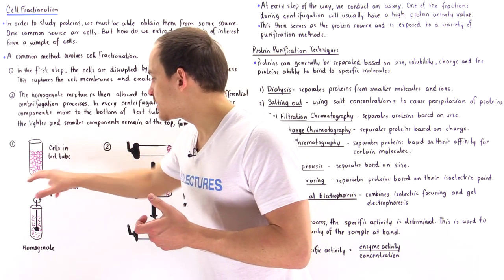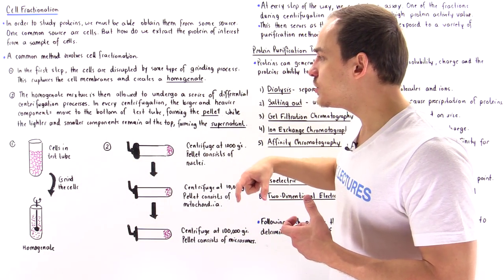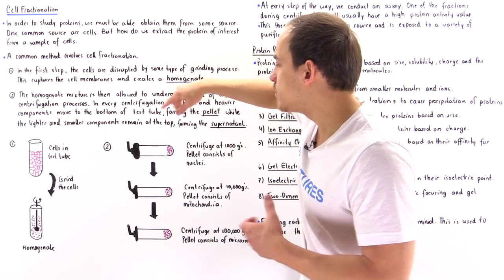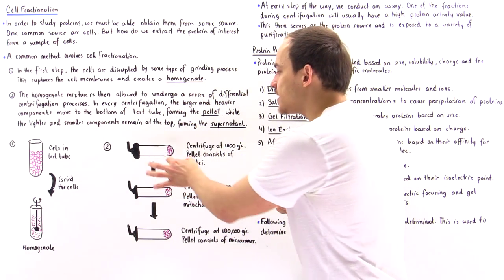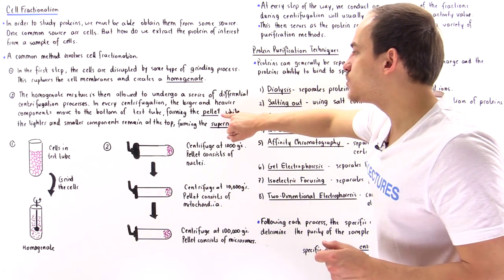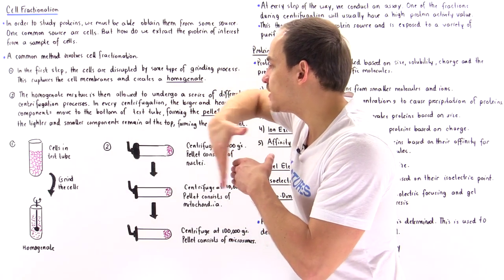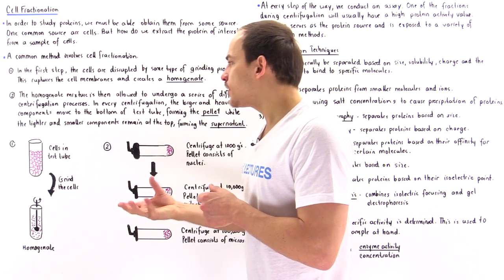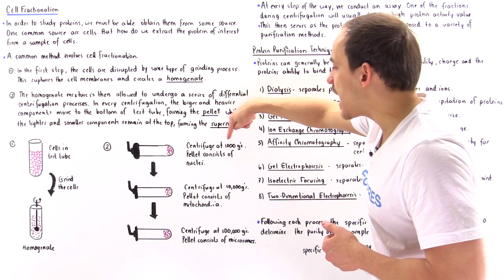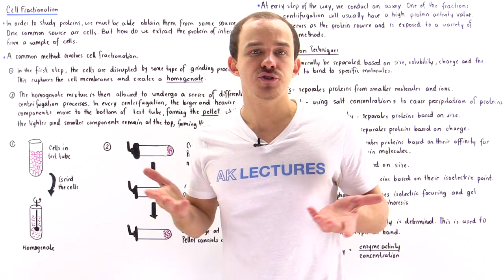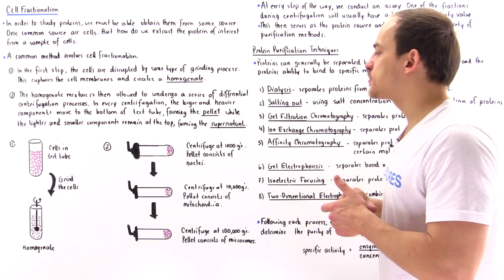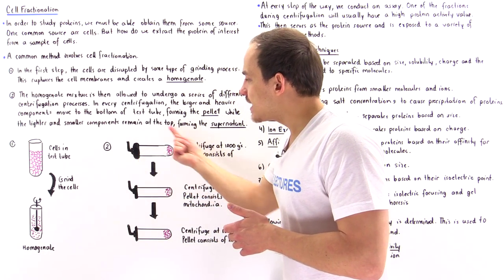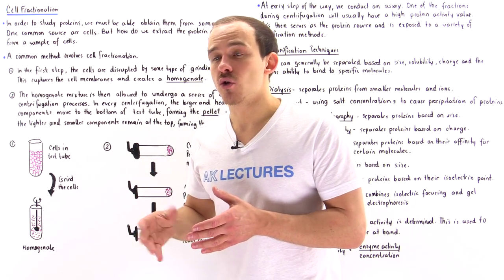In the first step, we take our test tube with our homogenate, place it into the centrifuge, and it rotates, eventually separating the mixture. The very dense material ends up at the bottom — that section is known as the pellet. The rest ends up higher up — that entire section is known as the supernatant. In the first centrifugation process, our acceleration is 1000 g's, where g is the gravitational pull due to the earth, 9.8 meters per second squared.